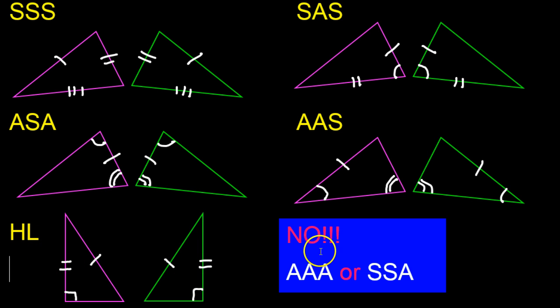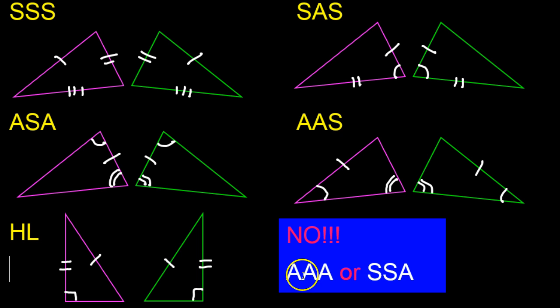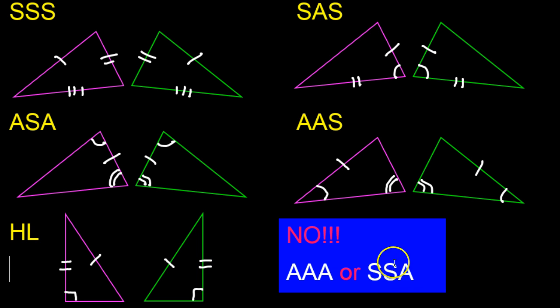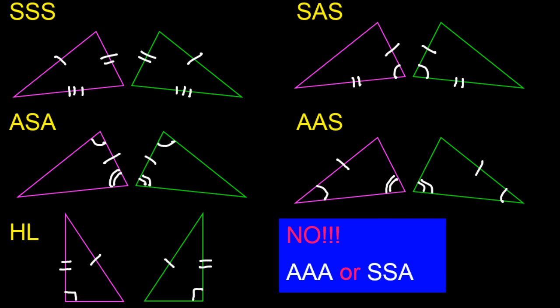Notice that there is no congruence theorem for angle, angle, angle, or side, side, angle. So if you have three pairs of congruent angles, you have nothing in terms of proving that triangles are congruent. If you have two sides and the angle that is not between them, we already have side, angle, side — that's two sides and an angle — but the angle has to be in the middle. If you have two sides and an angle that's not in the middle, that doesn't work.